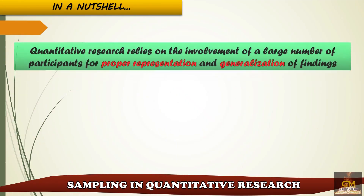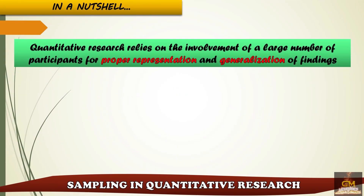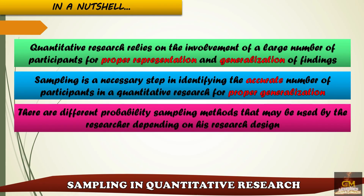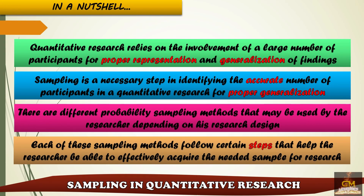In a nutshell, quantitative research relies on a large number of participants for proper representation and generalization of findings. Sampling is a necessary step in identifying the accurate number of participants for proper generalization. There are different probability sampling methods the researcher may use depending on the research design, and each follows certain steps to effectively acquire the needed sample.